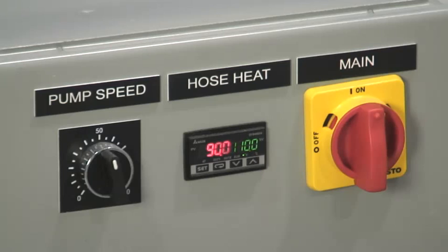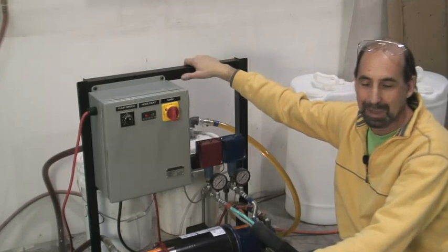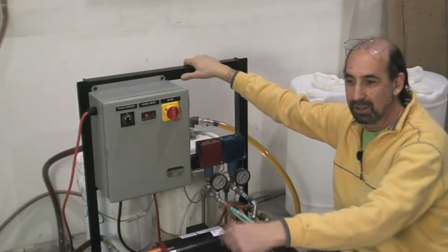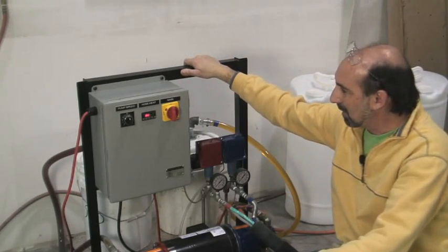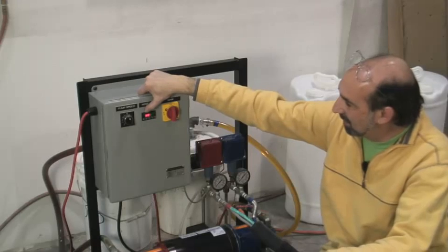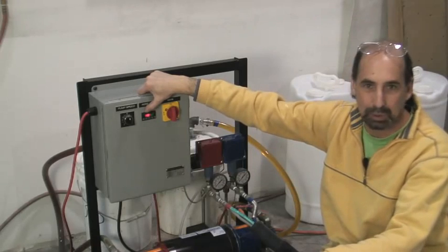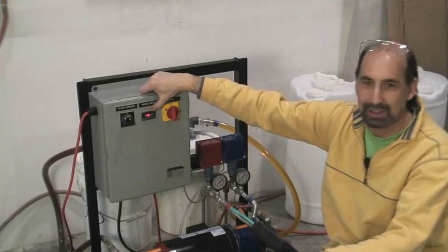The cool thing about the little pup, one of the many cool things about it, is that we do run on standard 120 volt AC power. And the red indicates the actual hose temperature. The green indicates the set temperature.